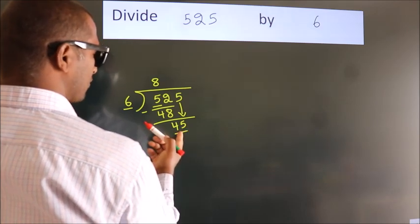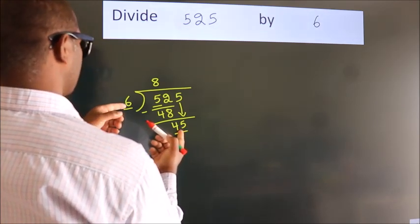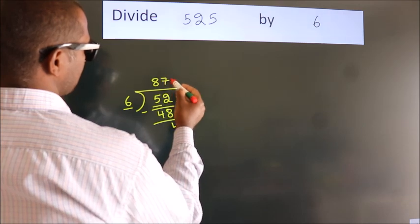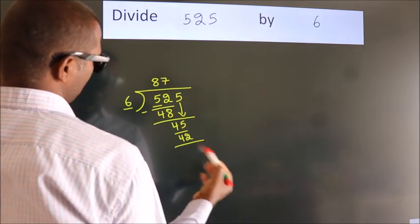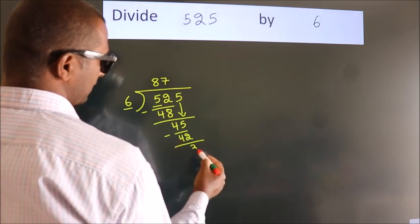A number close to 45 in the 6 table is 6 times 7 equals 42. Now, we subtract and get 3.